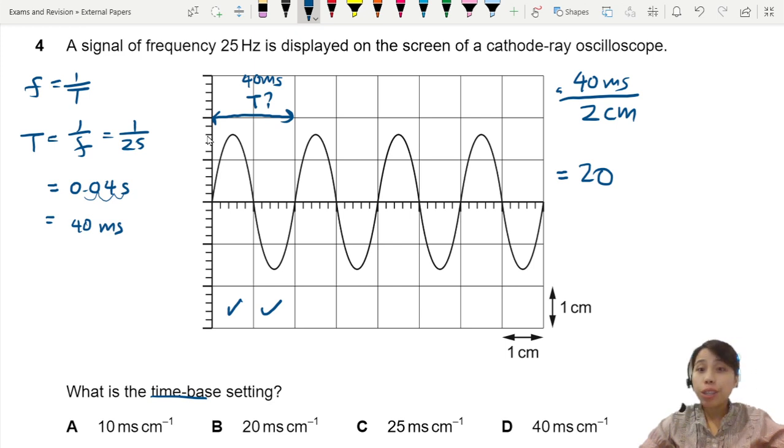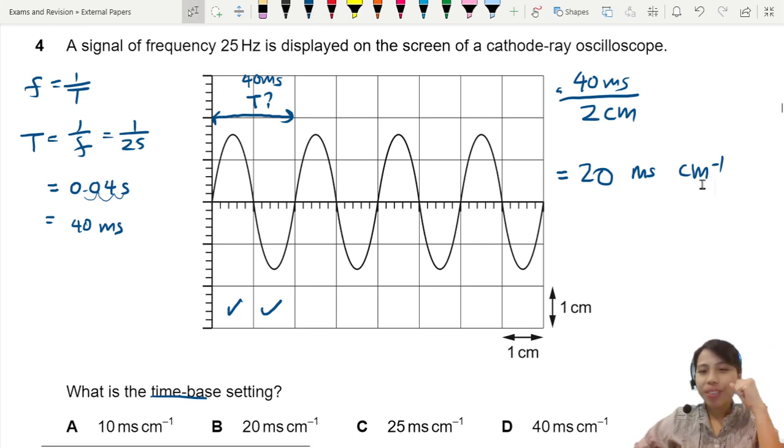How do you know if this is correct? Check the units. Milliseconds divided by cm. Does this match the units down there? If it does, you're good to go. So milliseconds per cm. That's how you can find the time-base setting. The answer is B.